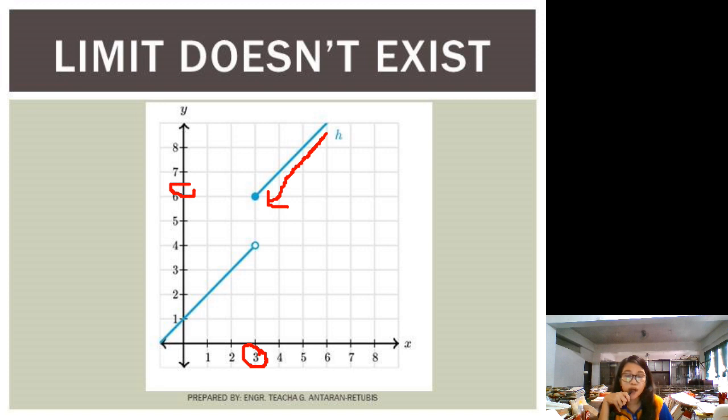Or, the value of y is approaching also 6. But if you approach 3 from the left, here, your function is approaching what value? It is 4. So what can we conclude from here? As you notice, they are not the same.